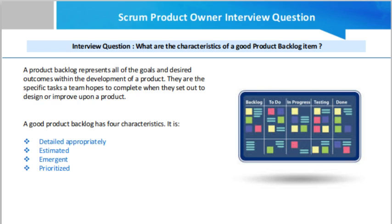A product backlog represents all the goals and desired outcomes within the development of a product. They are the specific tasks a team hopes to complete when they set out to design or improve upon a product. Backlogs are in constant evolution, changing and adapting based on the current needs of stakeholders and customers. To keep a backlog up to date and in its most effective form, it needs to be continuously refined and adopted.